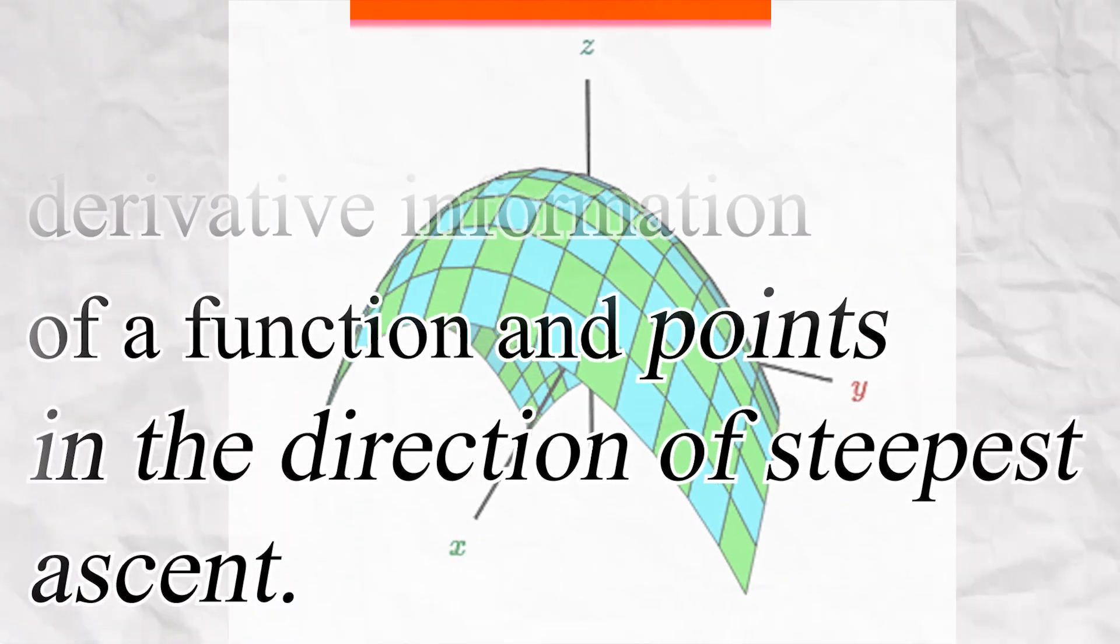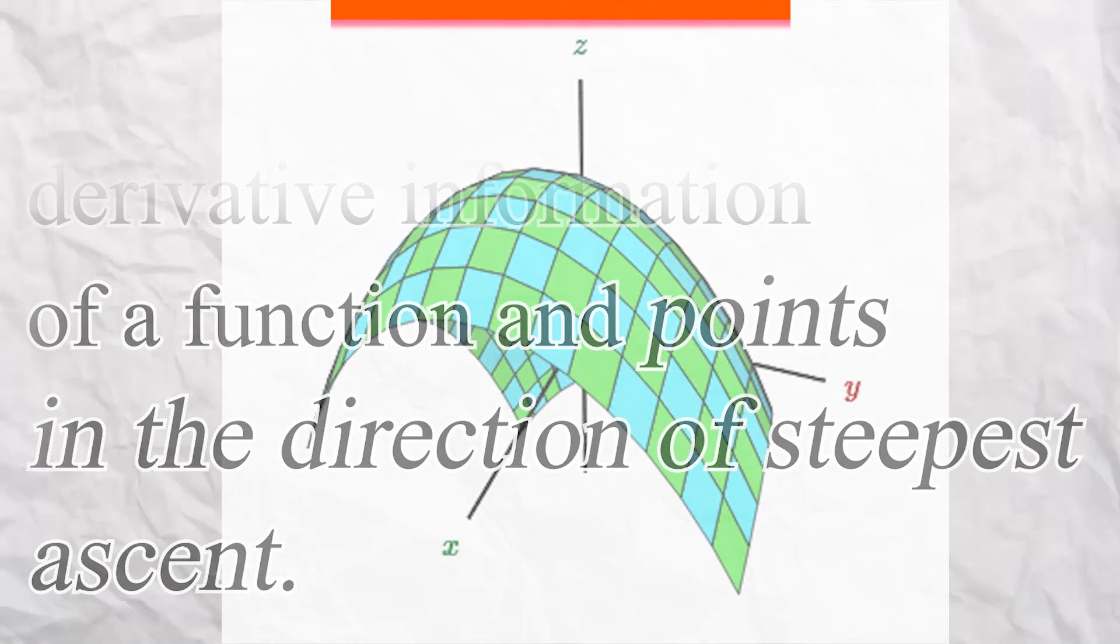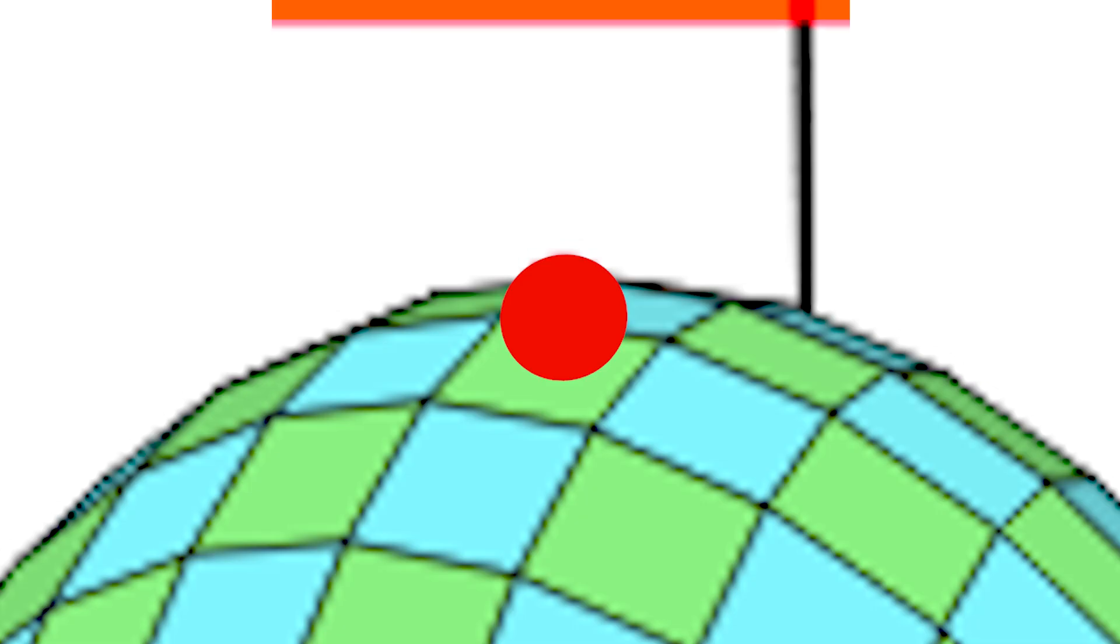As I said before, a gradient points in the direction of the steepest ascent. That means if we took any coordinate on this object, we can plug it into a gradient, and eventually, we'll reach a point called the zero gradient.